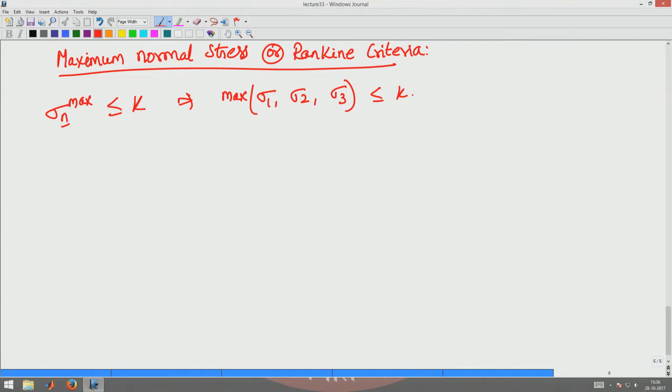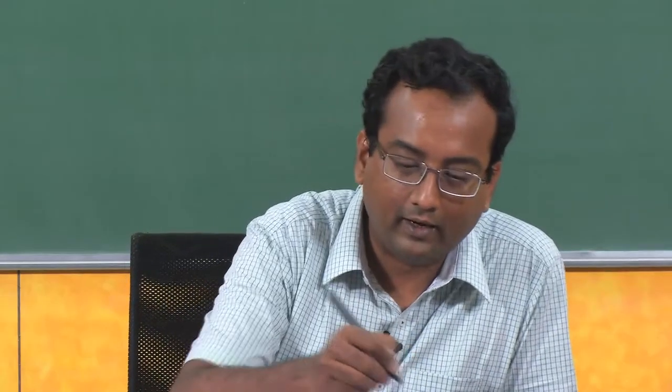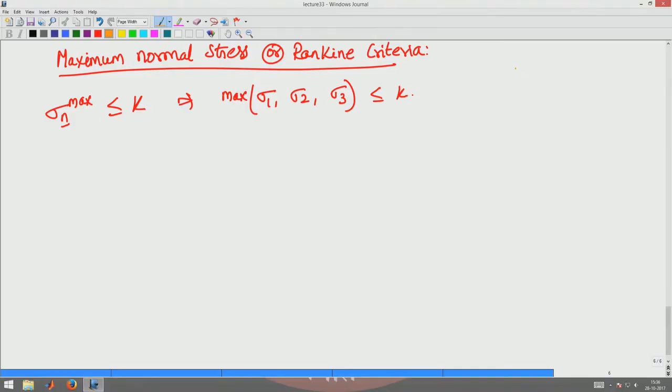So this theory allows us to have different values for tension and compressive strengths. The failure envelope for this curve would be in sigma 1, sigma 2 plane. It is going to be just a square.